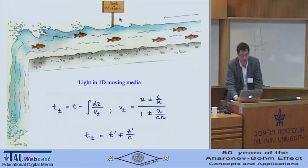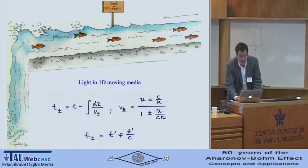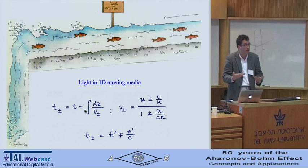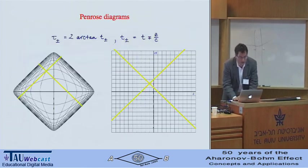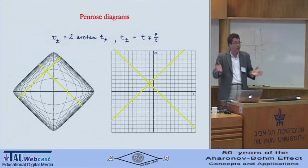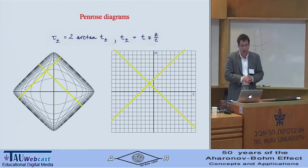If you then substitute this into the machinery, you find the propagation of light in a one-dimensional moving fluid — that's an exact solution. Notice that if you have a horizon, so when the speed of the material reaches the speed of light in the material, then the velocity in forward propagation has a zero, and therefore this variable develops a logarithmic singularity. That corresponds to two branches, on one side of the horizon and on the other side.